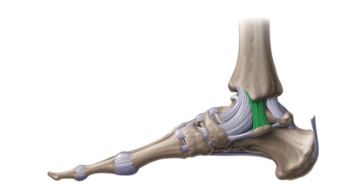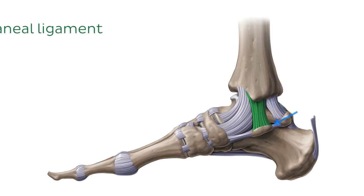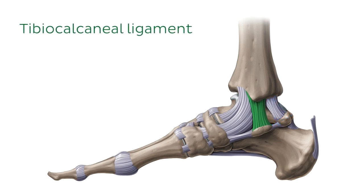Finally, the last ligament making up the tibial collateral ligament is now highlighted. This ligament runs from the tibia to the calcaneus and is therefore called the tibiocalcaneal ligament.